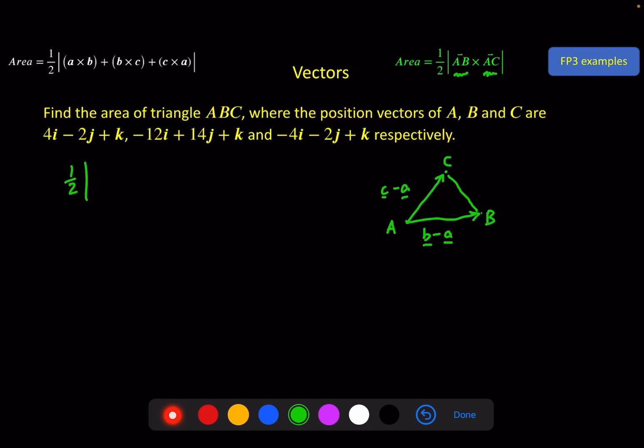So B minus A, that is -12, 14, 1 minus 4, -2, 1, which is -16, 16, 0. C minus A, -4, -2, 1 minus 4, -2, 1, which is -8, 0, and 0.